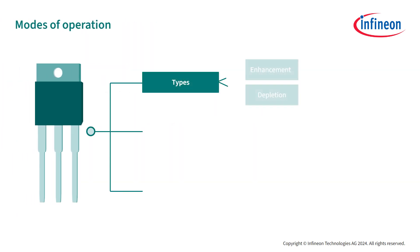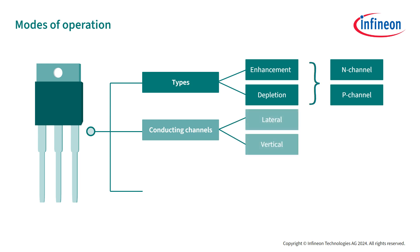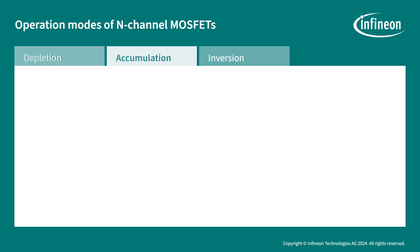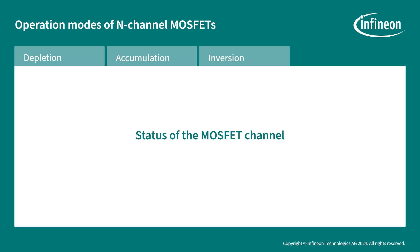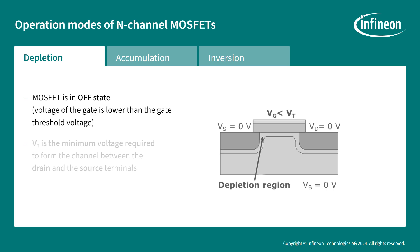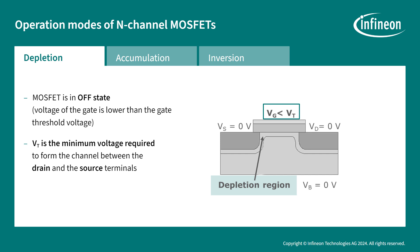Now it's time to go over the MOSFET operation modes on a basic level. MOSFETs operate in three different modes referring to the status of the MOSFET channel. The depletion mode refers to the MOSFET in the OFF state, meaning the voltage of the gate is lower than the gate threshold voltage. The gate threshold voltage is the minimum voltage required to form the channel between the drain and the source terminals. When the gate voltage is lower than this threshold, a depletion is formed between the drain and the source — the MOSFET is off and no current will flow.